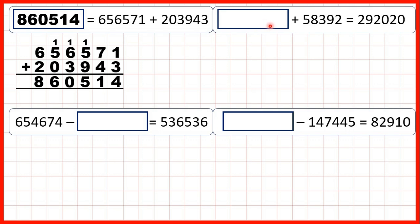Now, something plus 58,392 equals 292,020. So here we have a missing number addition problem, and whenever we have a missing number in an addition calculation, we always use subtraction to find our missing number.